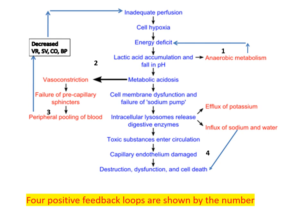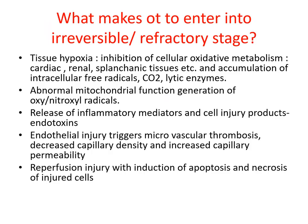I have numbered the positive feedback mechanisms one through four in these slides. Each one leads to another in a positive feedback loop. This is the stage of shock in which positive feedback loops are operating, in contrast to the compensated state where negative feedback mechanisms restore blood pressure. Tissue hypoxia inhibits cellular oxidative metabolism.